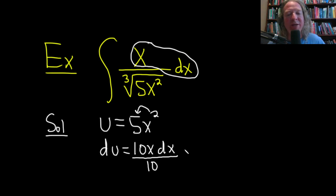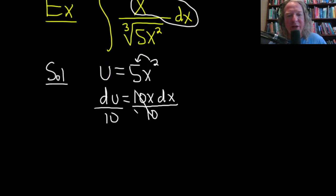Remember, the goal is to make this look like what's in the integrand. So divide by 10. That gives us du over 10 can be written as 1 tenths du. And then here we're left with x dx, just like that.